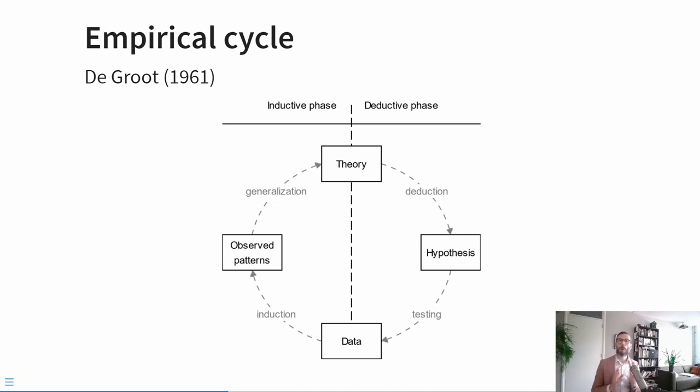Of course, in real life research practice is messier than this. But it's important for the context of this course to know that we are mostly focusing on the right half of this empirical cycle — starting with a theory, deducing a hypothesis from that theory, testing that hypothesis in some data, interpreting the results, and reporting them. So let's make that procedure a little more concrete.